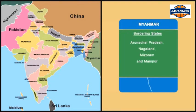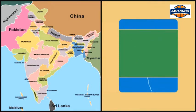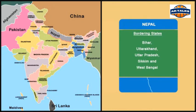The border length is 1,643 km. The Indian states Bihar, Uttarakhand, Uttar Pradesh, Sikkim and West Bengal share the border with Nepal. The border length is 1,751 km.